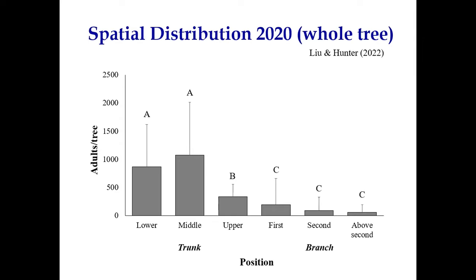In terms of spatial distribution on the whole tree, most of the adults will be found below the branches — on the lower trunk, which is about two meters above ground, and the middle section from two meters to the first branch. Almost 90% of adults we found were on those two sections. There is a strong correlation between the lower or middle trunk count and the total population for the tree, so we can use numbers found on those sections to estimate total adults on the whole tree.